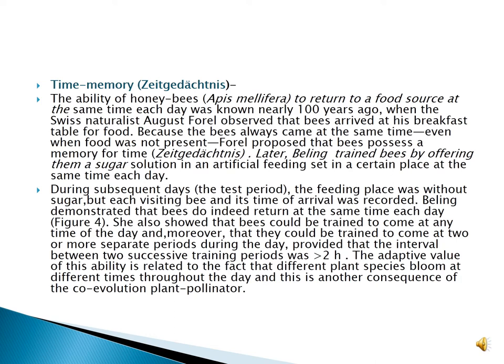Later, Beling trained bees by offering them a sugar solution at an artificial feeding station at a certain place at the same time each day. Even on test days when the feeding place was without sugar, the visiting bees' time of arrival was recorded, and Beling demonstrated that bees would invariably return at the same time each day.